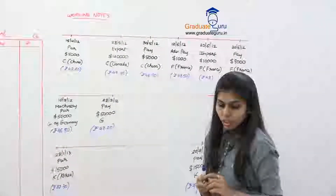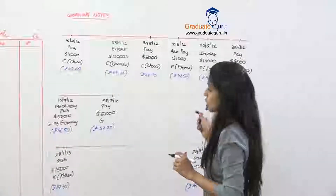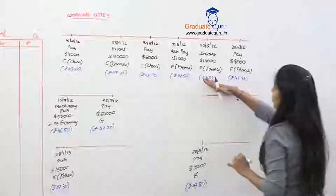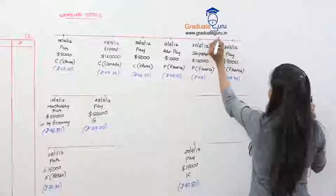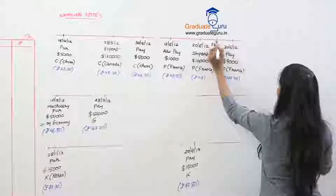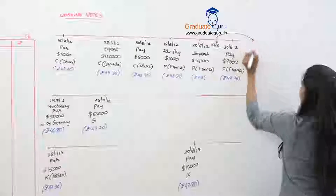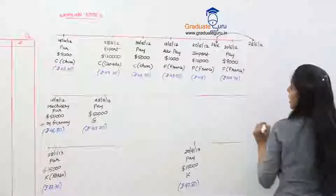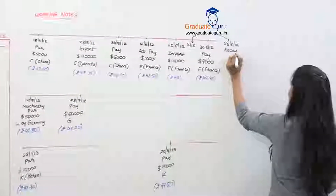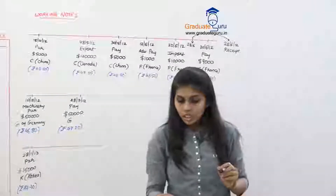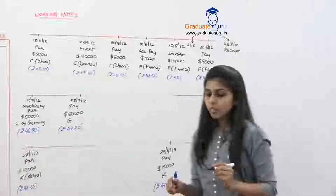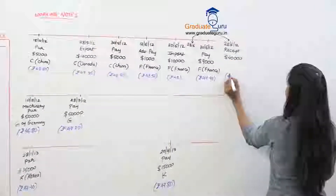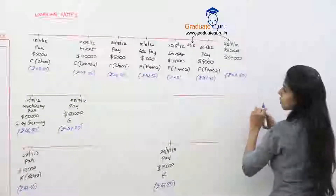On 28th June, payment of 40,000 dollars is received from C of Canada. Since there was no space on the timeline between 20th June and 30th June, we can add this entry with an arrow. The receipt of 40,000 dollars from C of Canada comes in at an exchange rate of rupees 47.60.